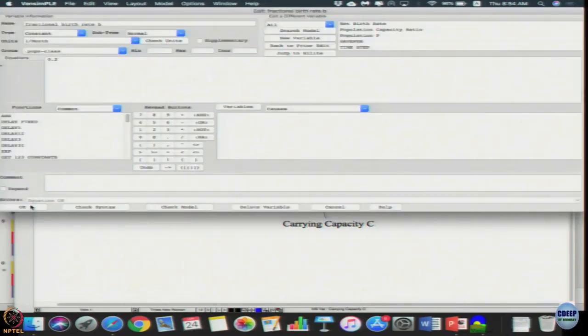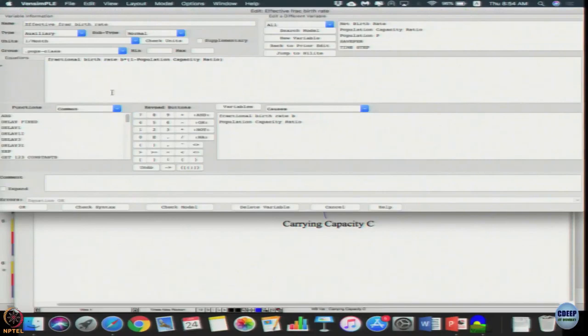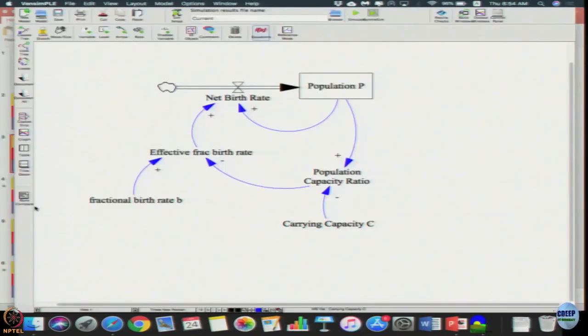We can check the fractional birth rate - it will take a value of 0.2. Effective fractional birth rate, we'll observe that it's nothing but fractional birth rate b times 1 minus population capacity ratio, that is P by C, which we saw in the slides. And net birth rate will be population times the effective fractional birth rate.